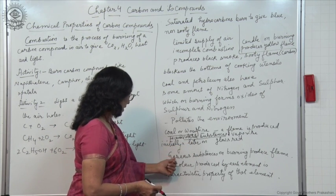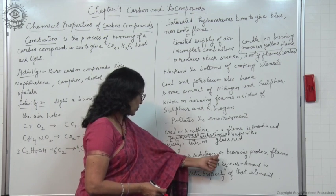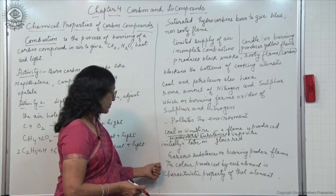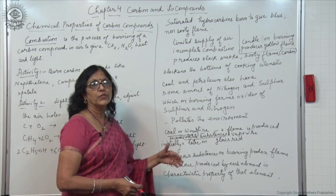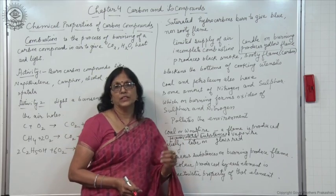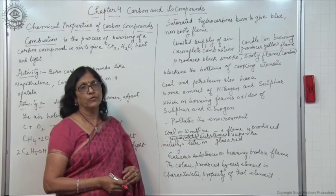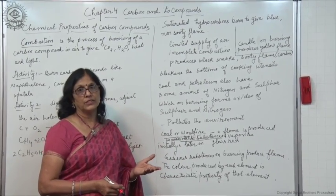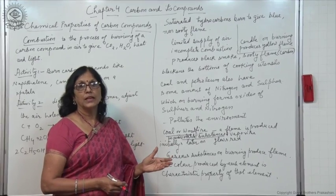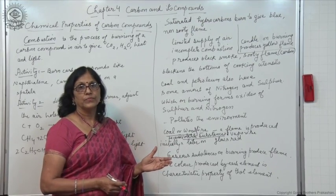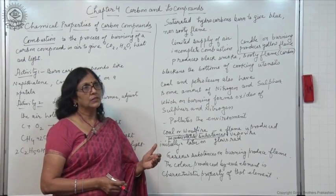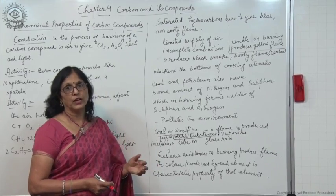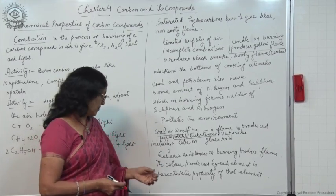Gaseous substances on burning produce a flame. Also, if you burn different elements in the lab over a flame, you will find they produce different colours which are characteristic of that element. Even identification of elements can be done on the basis of the colour produced on burning.